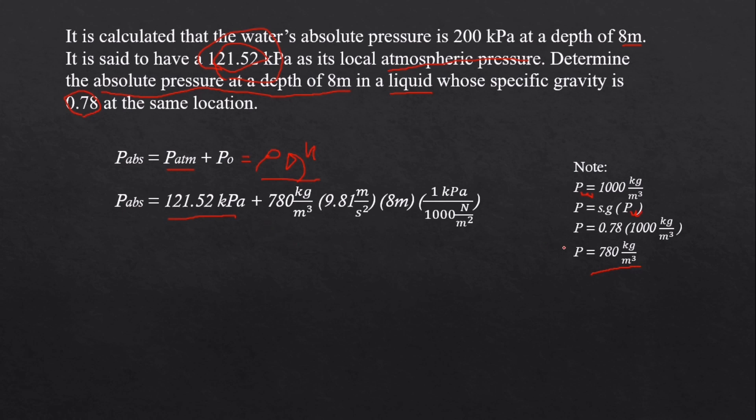Times the gravity which is 9.81 meter per second squared, times the height which is 8 meters. We all know that kilogram times meter per second squared is already Newton.